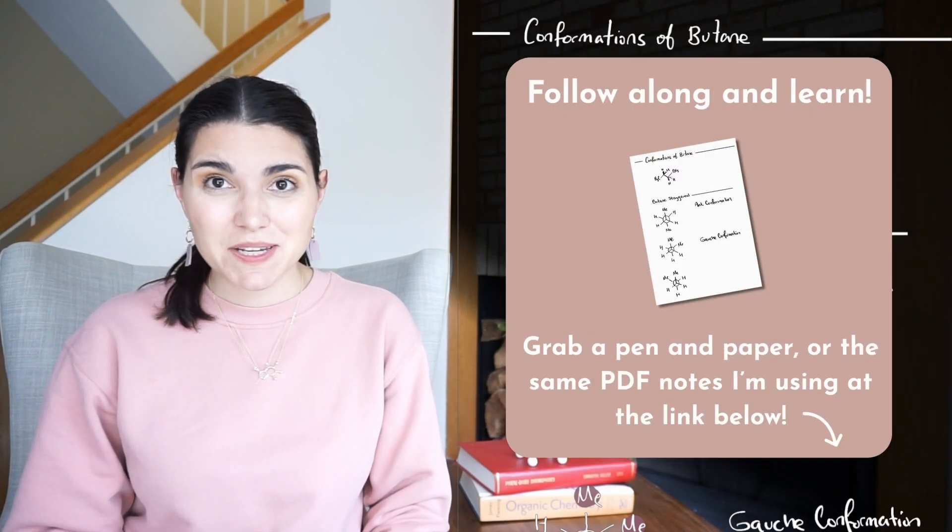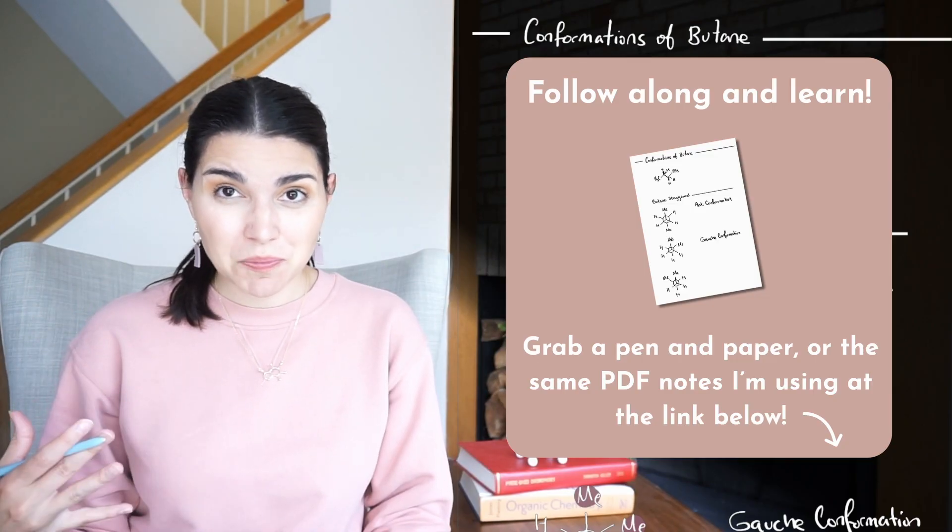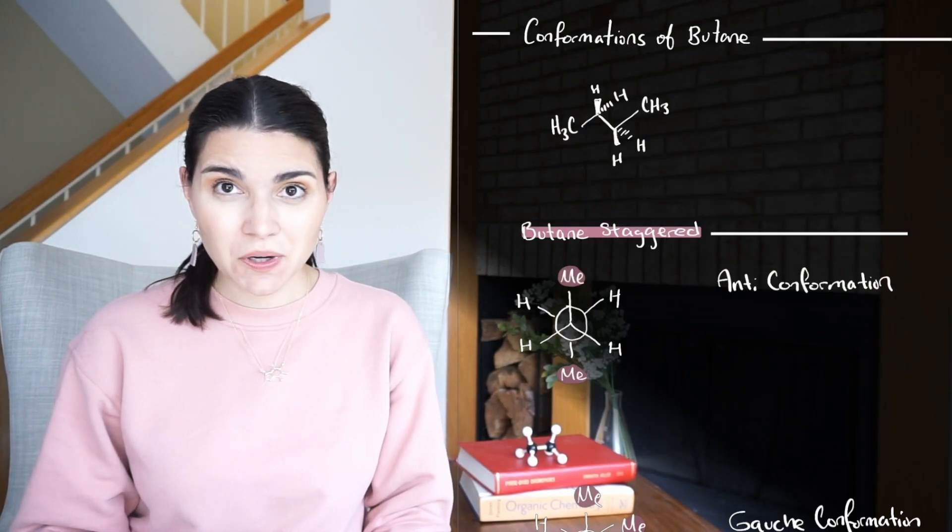We're going to continue to talk about conformations of alkanes, and we're going to move on from ethane to a longer molecule, butane. We've got four carbons.